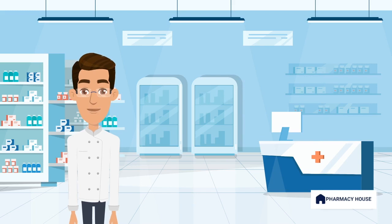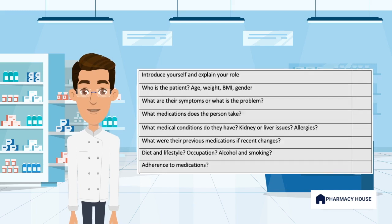Tip 1. A good history taking tool will not only save you time but help get you all the answers you need to make a clinical decision. History taking tools help you ask the patient a range of questions in an appropriate order, such as: who is the patient? What is their age and BMI? Are they on any medications and what recent medication changes have they had? If you are not allowed to bring written information into the exam, you should memorize these questions ahead of time.